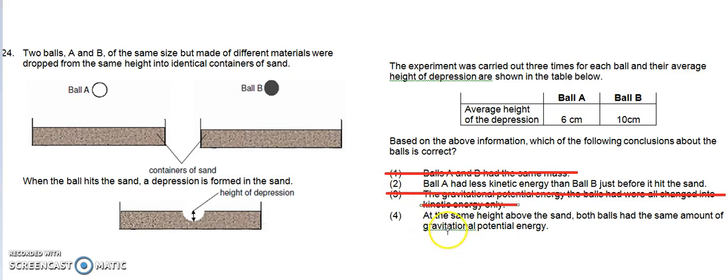Last one, Option 4: At the same height above the sand, both balls had the same amount of gravitational potential energy. When the balls are at the same height, they are of different mass and therefore have different gravitational potential energy. The ball with more mass will have more gravitational potential energy, and it will translate into greater kinetic energy and a greater average height of depression. Option 4 is also out.